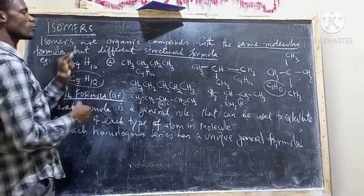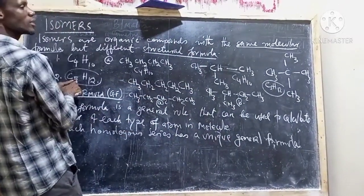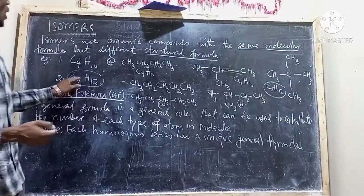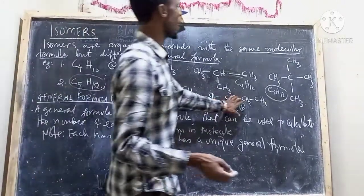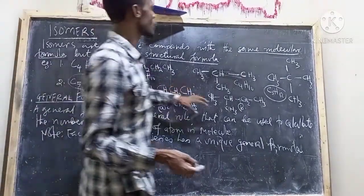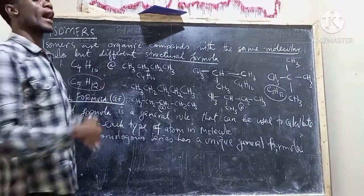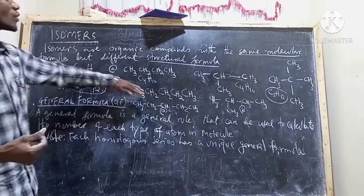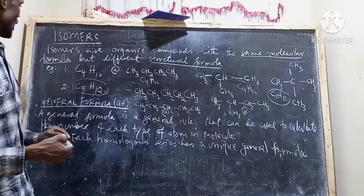As the number of carbons increases, the number of different structural formulas also increases. For example, with five carbons we can make three isomers, with four carbons we make two isomers, and with three carbons there are no isomers. In short, isomers increase as we increase the number of carbons.